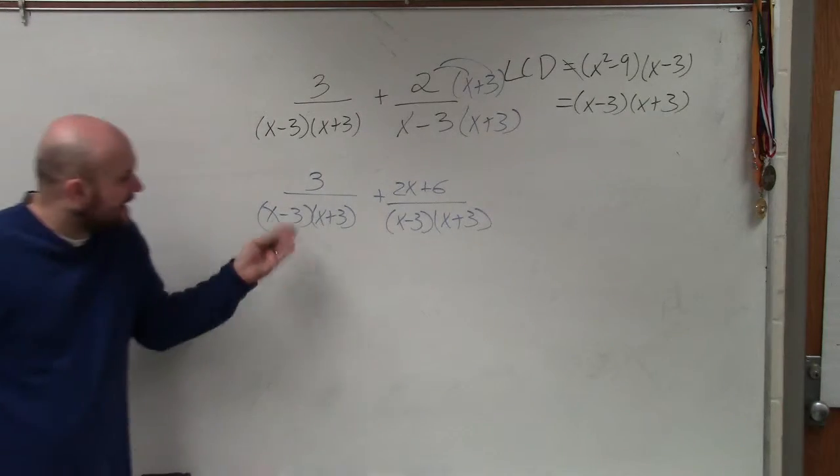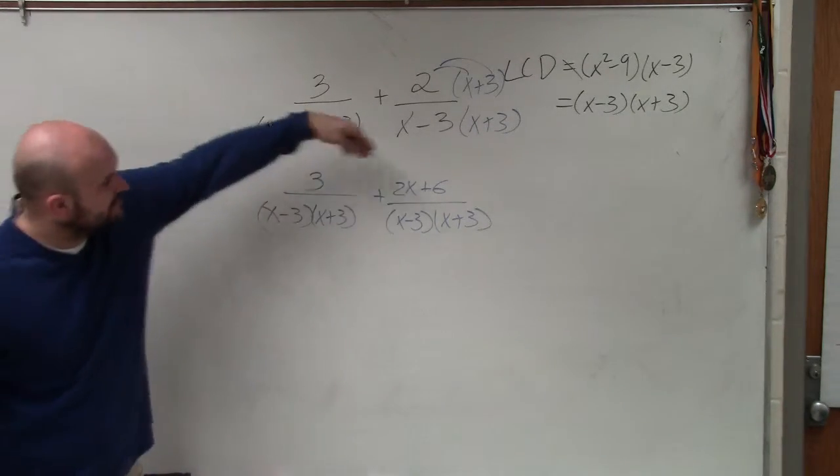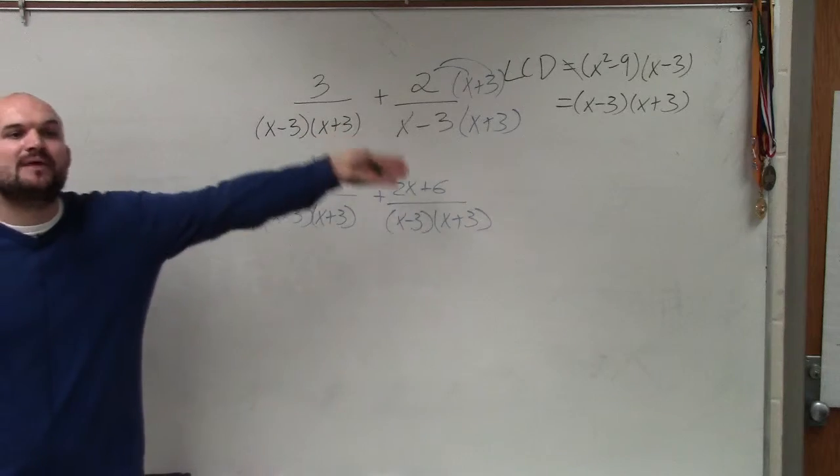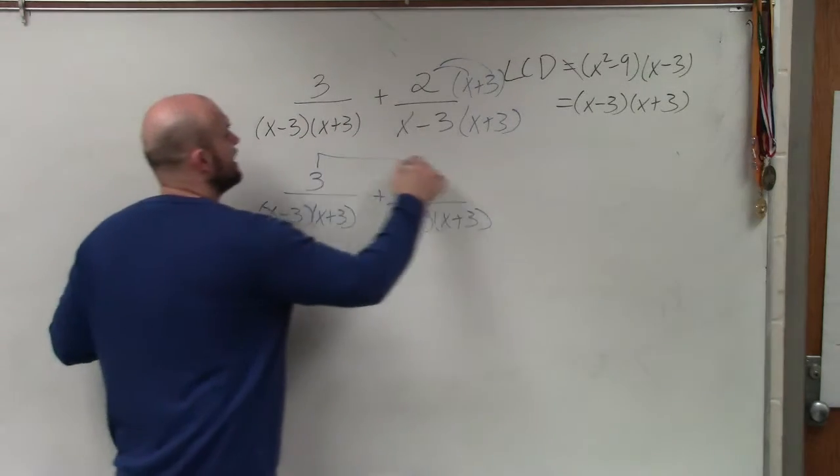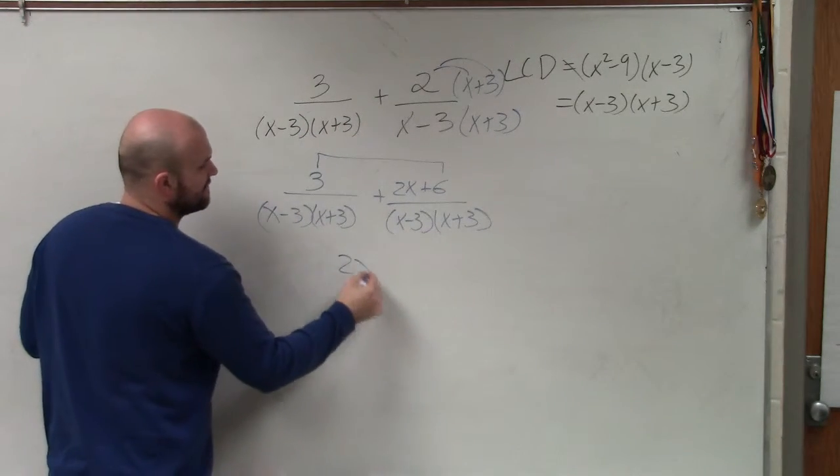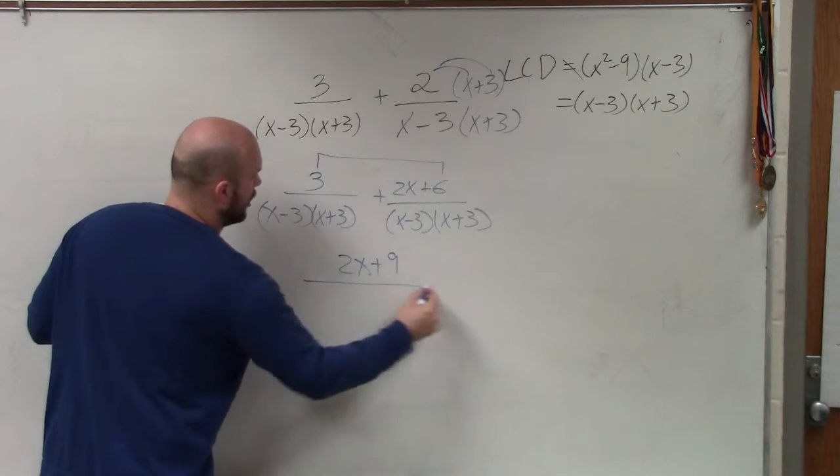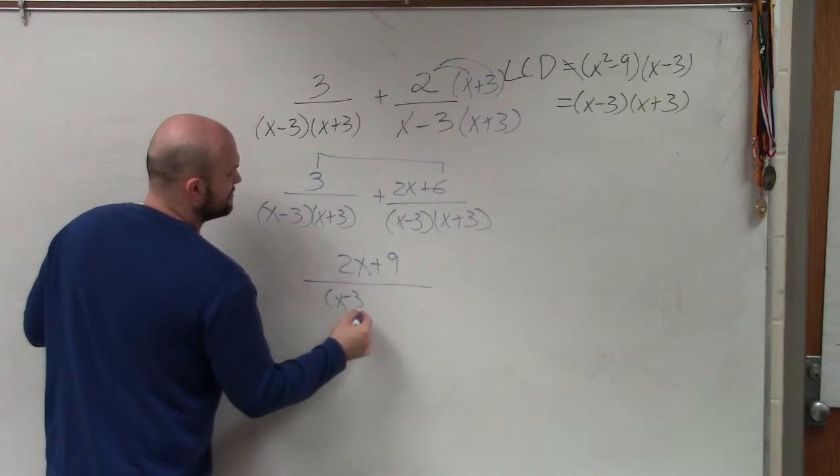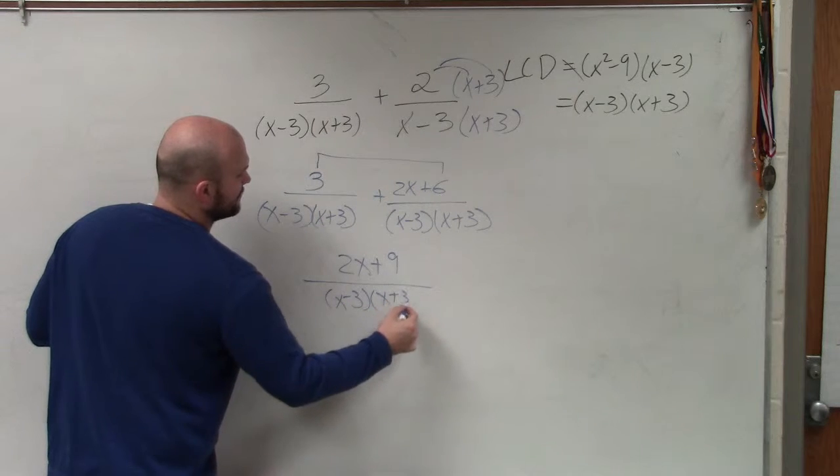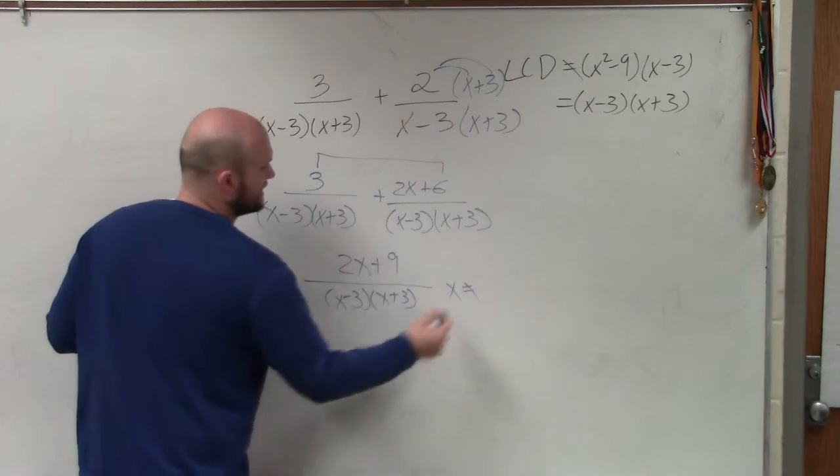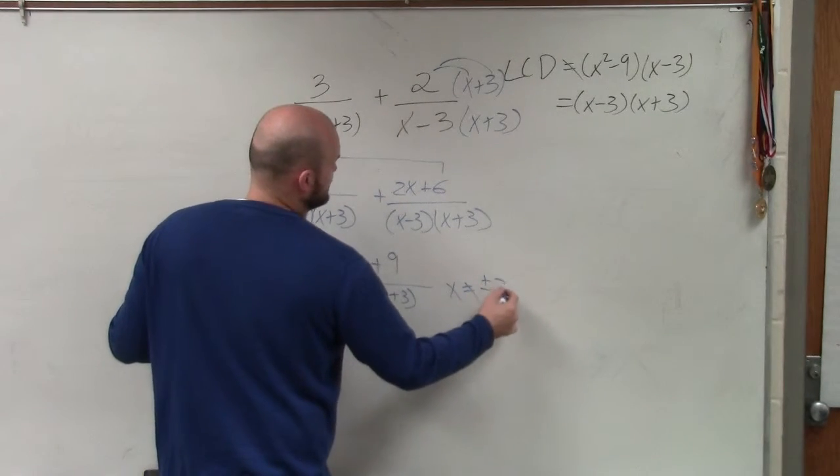Now, you guys can see I have two fractions with the same denominators, so I can combine the numerators, where I can combine 3 plus 6 is 9. So my final answer is 2x plus 9 all divided by x minus 3 times x plus 3, where x, again, cannot equal plus or minus 3.